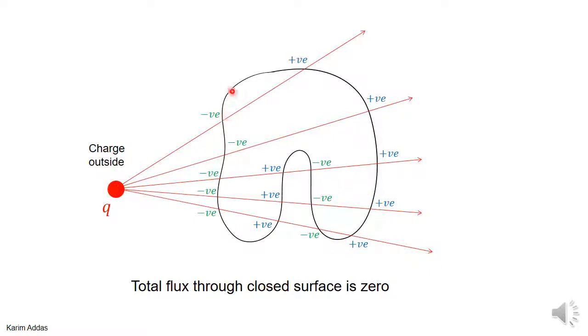The total electric flux through this surface — and here we're just showing a cross section — this is supposed to be a three-dimensional closed surface. The total flux would be zero.